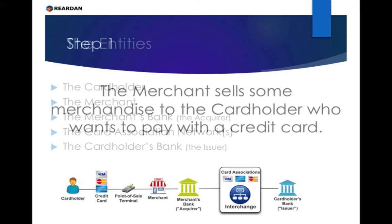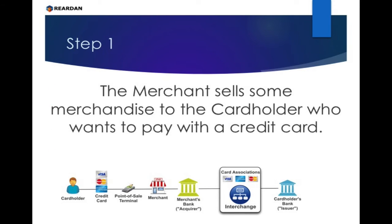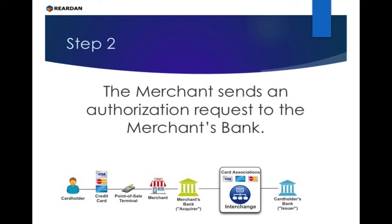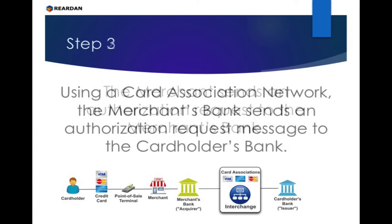Step 1: The merchant sells some merchandise to the cardholder who wants to pay with a credit card. Step 2: The merchant sends an authorization request to the merchant's bank. Step 3: Using a card association network, the merchant's bank sends an authorization request message to the cardholder's bank.